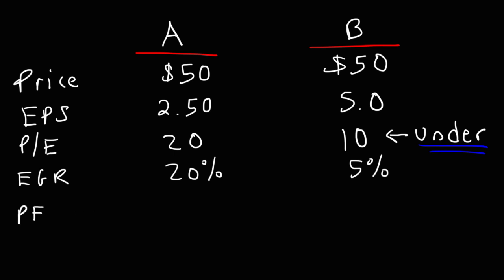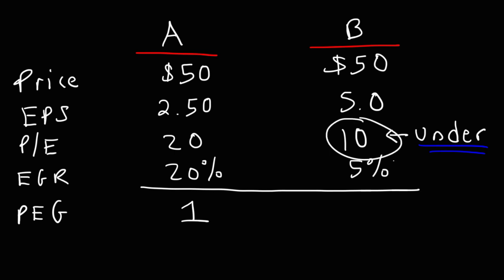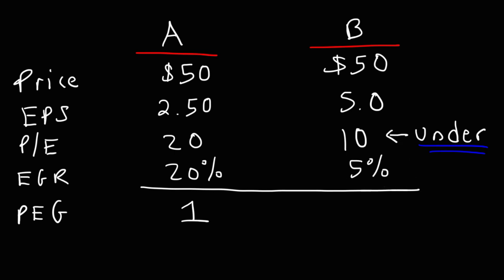The PEG ratio is the PE ratio divided by the earnings growth rate. So 20 divided by 20% gives us a PEG ratio of 1 for Company A. And 10 divided by 5% gives us a PEG ratio of 2 for Company B.